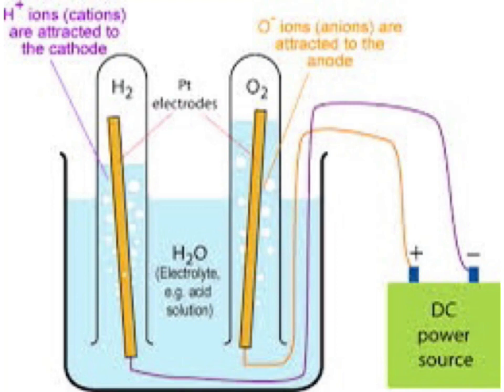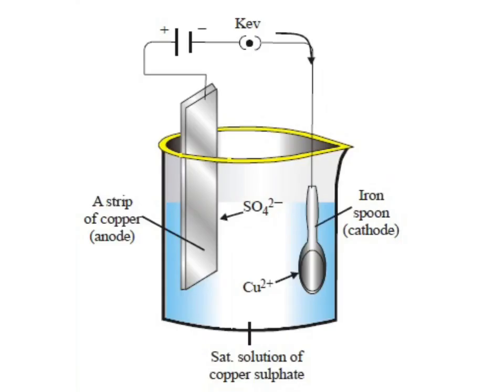Wait for four to five minutes and observe the two carbon electrodes carefully. We see that bubbles of gases are produced at the two carbon electrodes. The formation of gas bubbles shows that a chemical change has taken place in water on passing electric current through it. Oxygen gas is formed at the positive electrode and hydrogen gas is formed at the negative electrode.